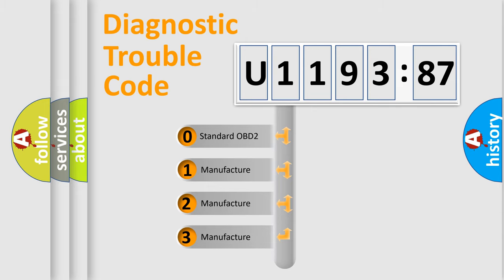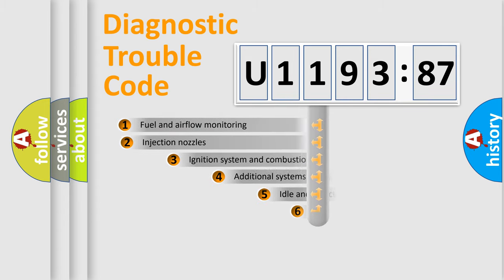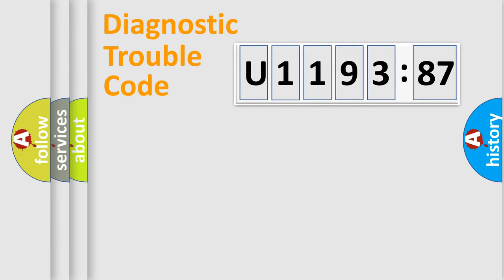If the second character is expressed as zero, it is a standardized error. In the case of numbers 1, 2, or 3, it is a manufacturer-specific error. The third character specifies a subset of errors. The distribution shown is valid only for the standardized DTC code. Only the last two characters define the specific fault of the group.